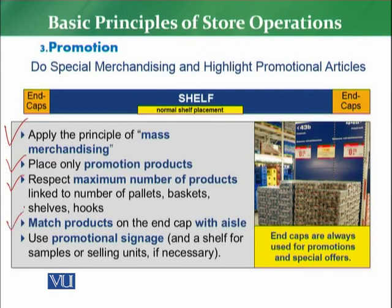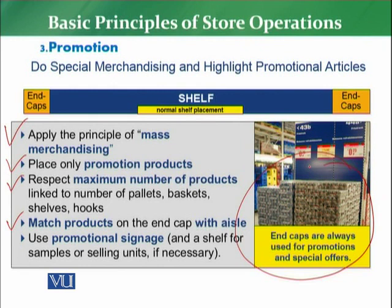Then we have the rule: match product on the end cap with the aisle. The family of products present in the aisle — you have to normally match the products. If in the main aisle there are grocery products, then the main shelf, the end cap, the head shelf — that is the main place where you should match them with the products in the aisle. If inside there is an oil category and on the end cap there is a beverages category, it will not go with the same theme and the customer will not be very encouraged. So the principle is: you have to match the products in the aisle which are placed on the end cap.